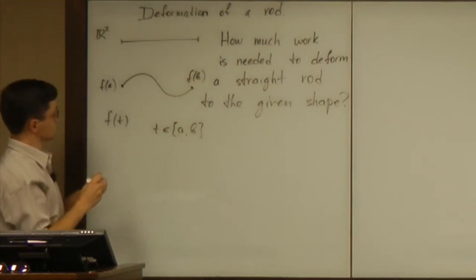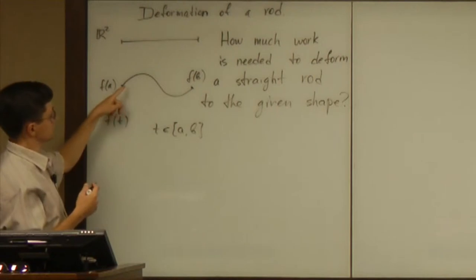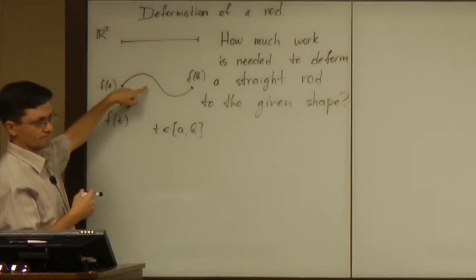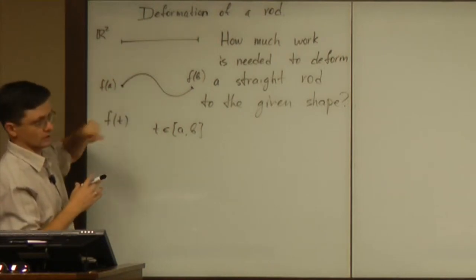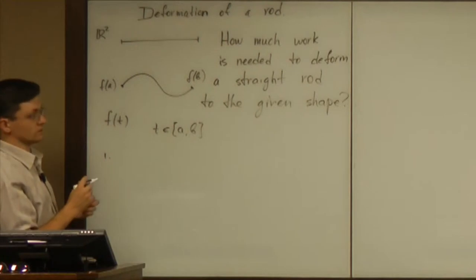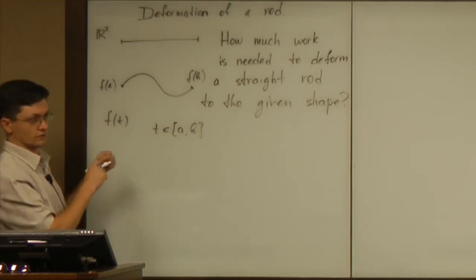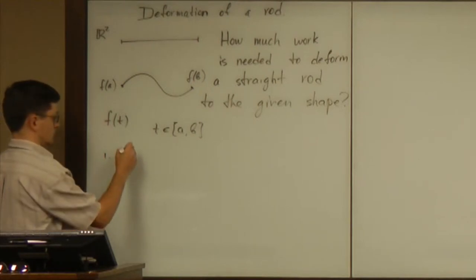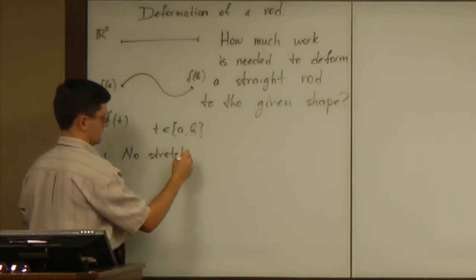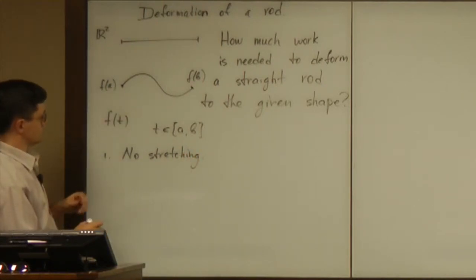And we basically look only at the deformed shape. And we assume that the straight rod has exactly the same length. So that's our first assumption. And that means that there is no stretching of the rod. We don't change the length.